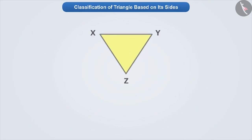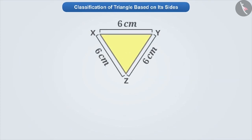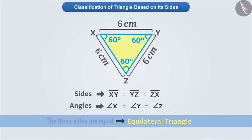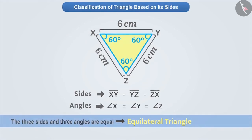Now, look at this triangle. On measuring this triangle, we find that all its three sides are equal. A triangle whose three sides are equal is known as an equilateral triangle. If we measure its angles, we find that all the angles of such a triangle are also equal. That is, all the sides and all the angles of an equilateral triangle are equal.